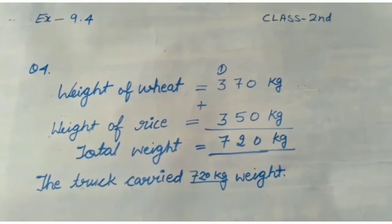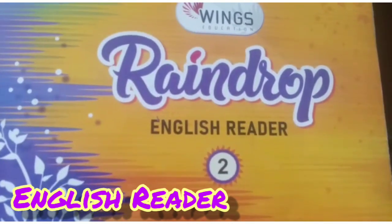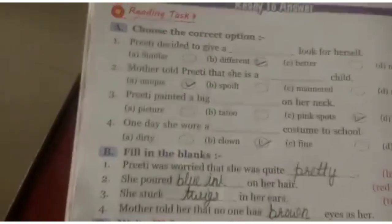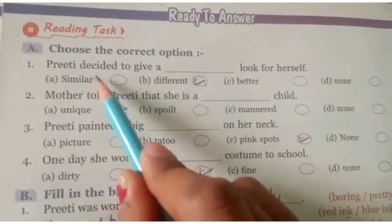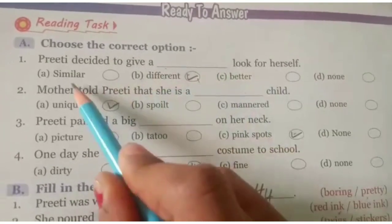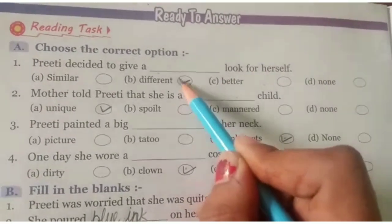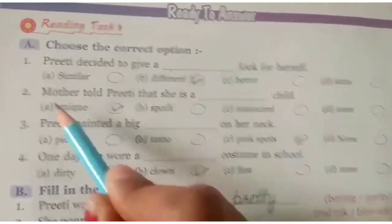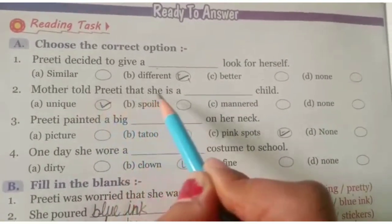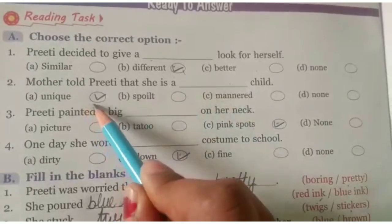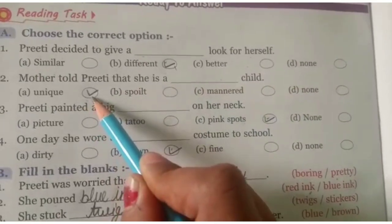Welcome to our YouTube channel. I am Pashama, your English teacher for class 2nd. In the previous video we completed chapter 12 word meanings. Today I will start 'choose the correct option.' First: Preeti decided to give herself a dash look. Options: 1. similar, 2. different, 3. better, 4. none.